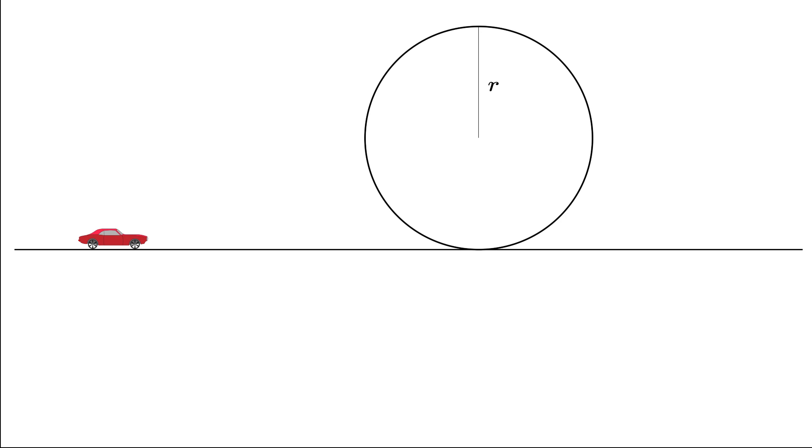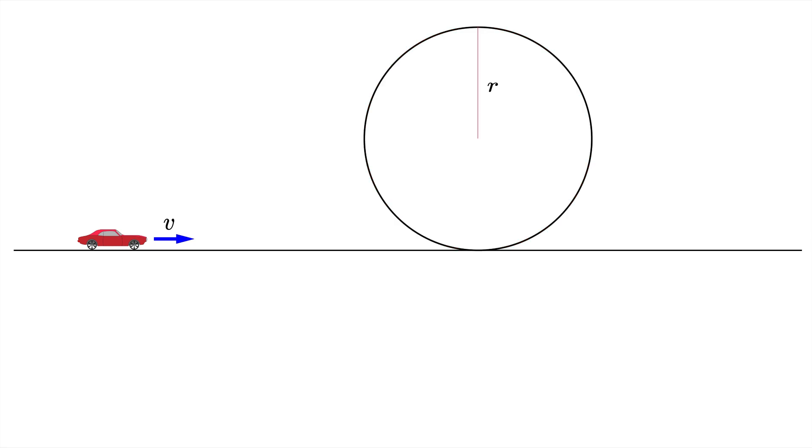In this problem we have a car moving with velocity v through this loop of radius r, and you want to know what's the minimum velocity you need in order to successfully complete the loop without falling down.